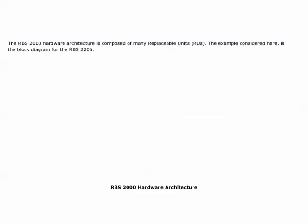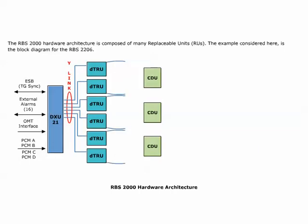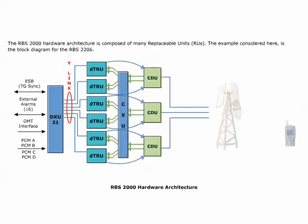The RBS-2000 hardware architecture is composed of many replaceable units such as DXU, DTRU, CDU, CXU, and PSU.